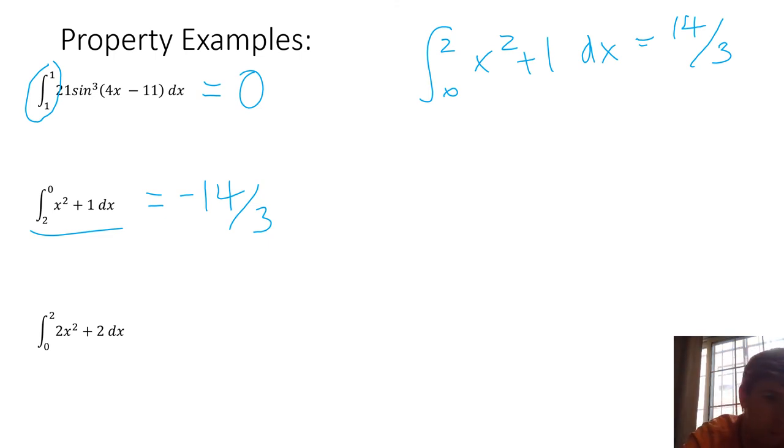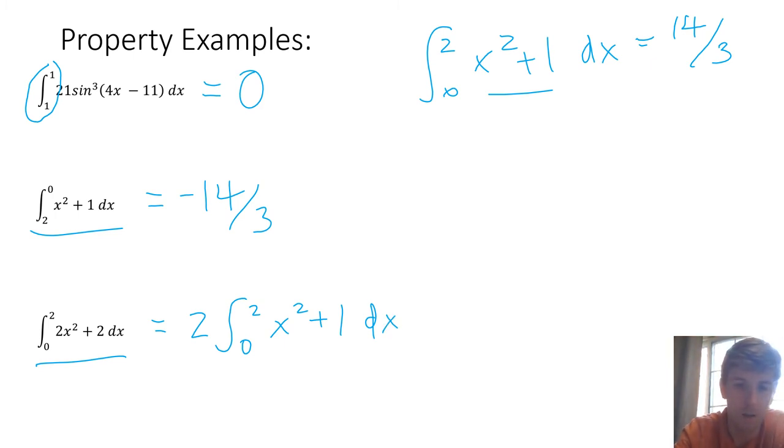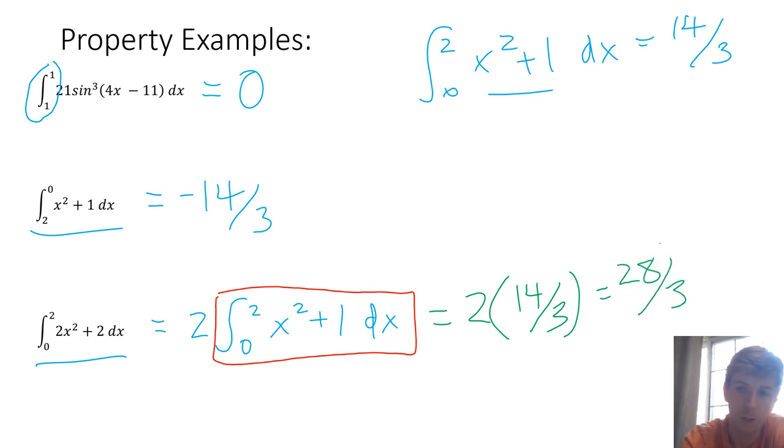Down here, this third one, we notice that what we have inside the integral, our actual function, is just double what we had here. So I can rewrite this as 2 times the integral from 0 to 2 of x squared plus 1 dx. This is just that constant multiple, I can pull it out front. I know what the answer to this definite integral is, I know that equals 14/3. So this whole thing together is just 2 times 14/3, which equals 28/3. Those are just a few examples of how you can use those properties to your advantage to save you some time, effort, and heartache on some of these examples.